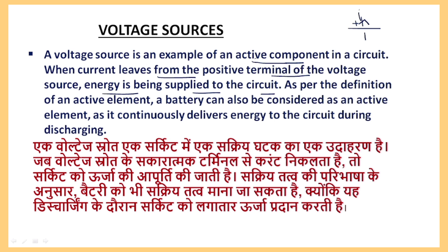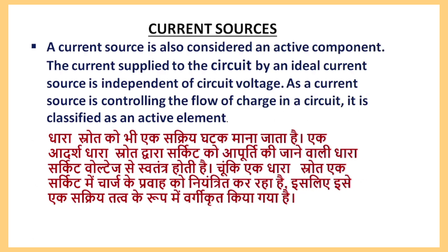A battery can also be considered as an active element, as it is continuously delivering energy to the circuit during discharging. So the battery is also an active element. The voltage source is also considered as an active component. When the current source supplies current to any circuit, it is also considered an active element because it also supplies current to any circuit.